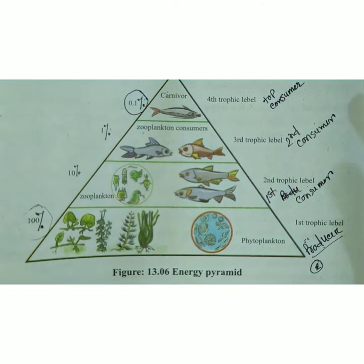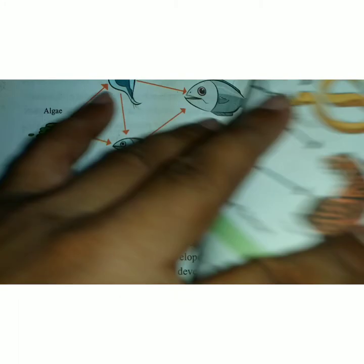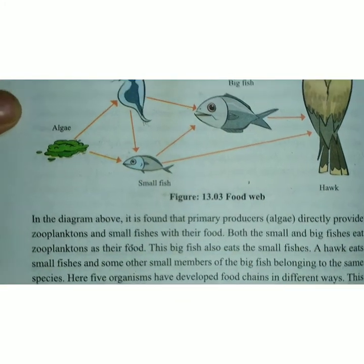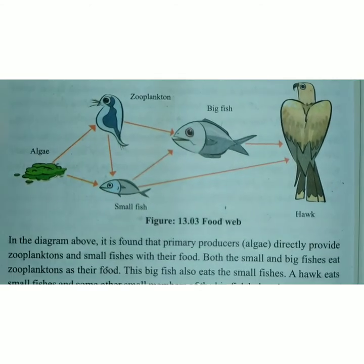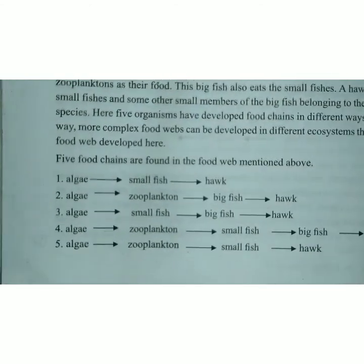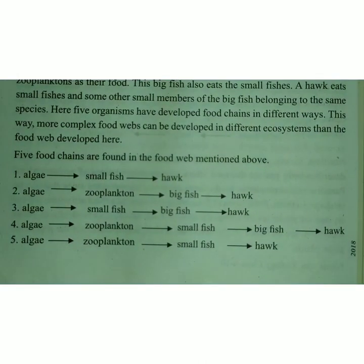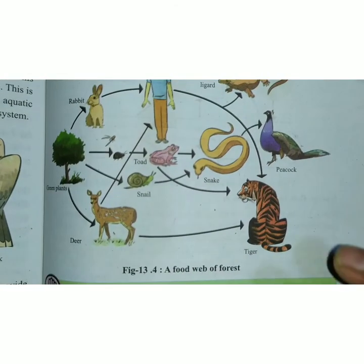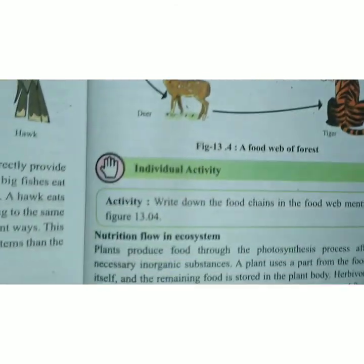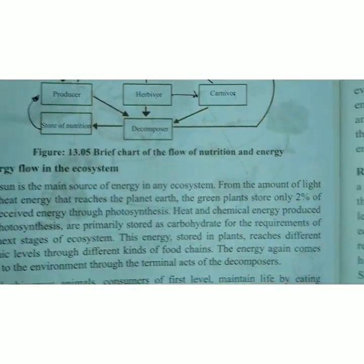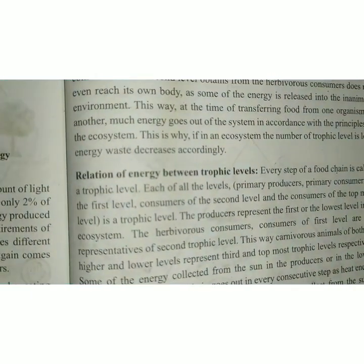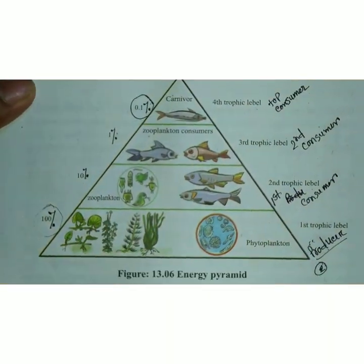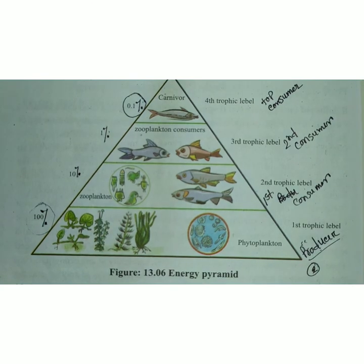In today's class I tried to discuss food web, the many food chains that collectively form a food web, the terrestrial food web with its many food chains, nutrition flow, energy flow, the relationship between trophic levels, and energy flow percentages across trophic levels. Thank you very much for participating in our online class. Goodbye.